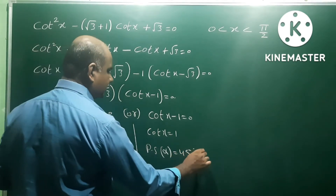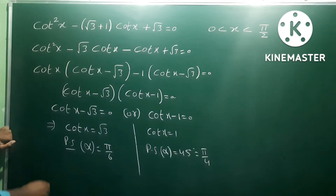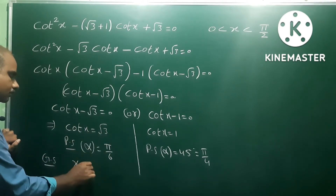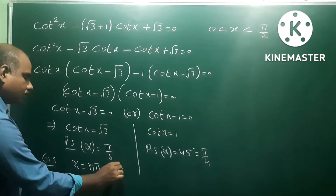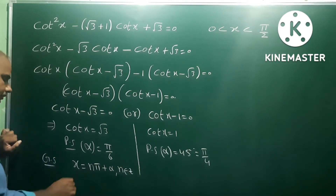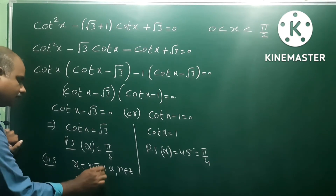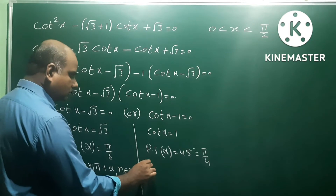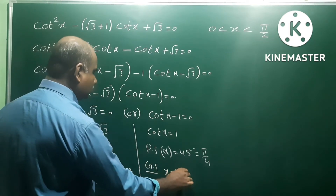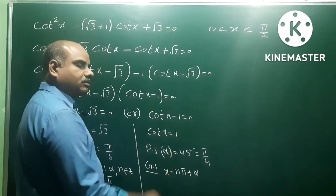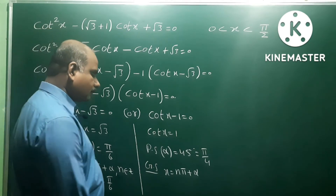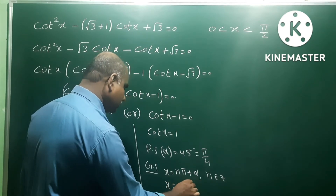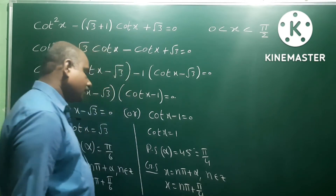The principal solution gives x = π/6 (for cotx = √3) and x = π/4 (for cotx = 1). The general solution formula for cotθ = k is x = nπ + α, where n belongs to Z. So the general solutions are x = nπ + π/6 and x = nπ + π/4.